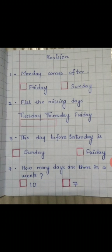Now the second question is: fill the missing days. Look at the days written there — which day is missing in between? The first one is Tuesday. After Tuesday, what will come? Yes, Wednesday. Wednesday is not there, so you have to write the Wednesday spelling in that box.